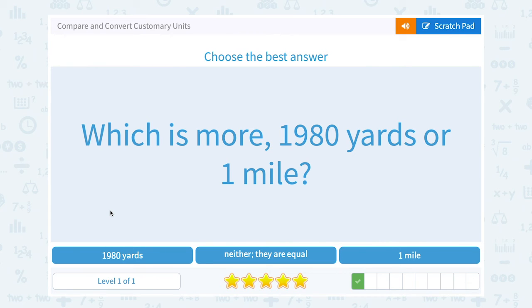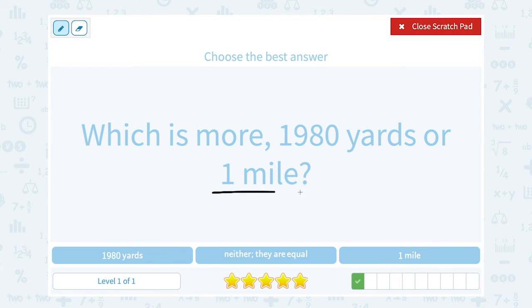Which is more, 1,980 yards or 1 mile? To figure this out, we need to know how many yards are there in a mile. And 1 mile is equal to 1,760 yards. So notice, 1,980 yards is more than a mile because it's more than 1,760 yards.